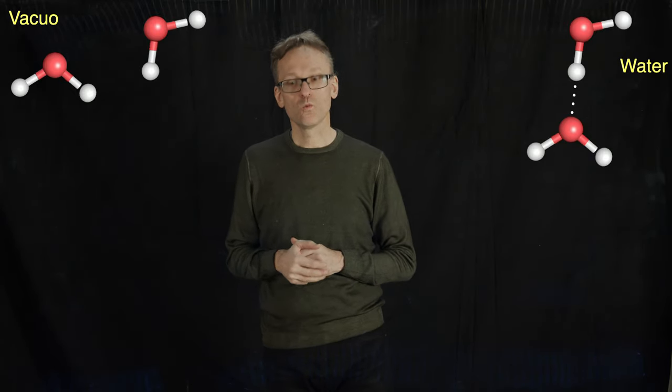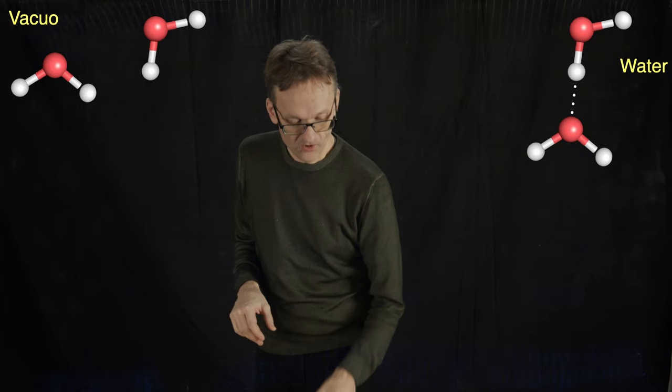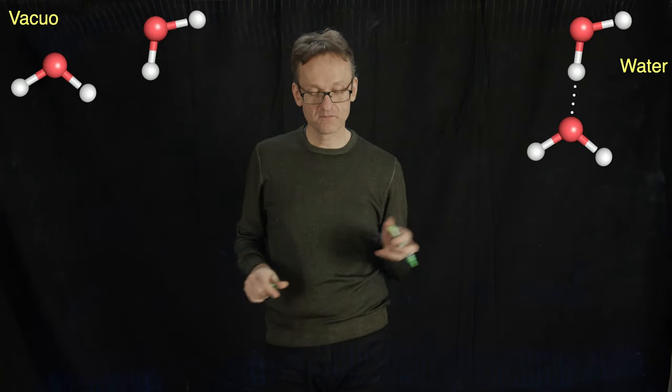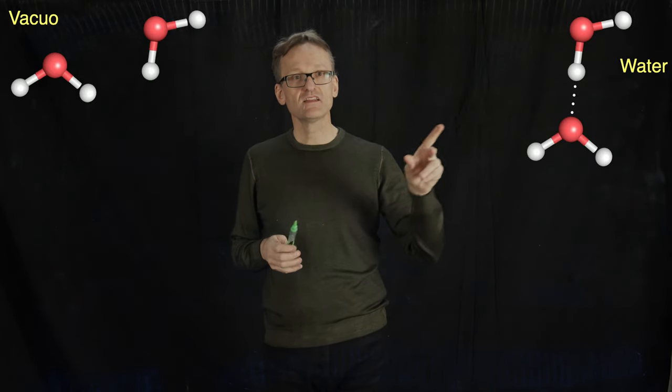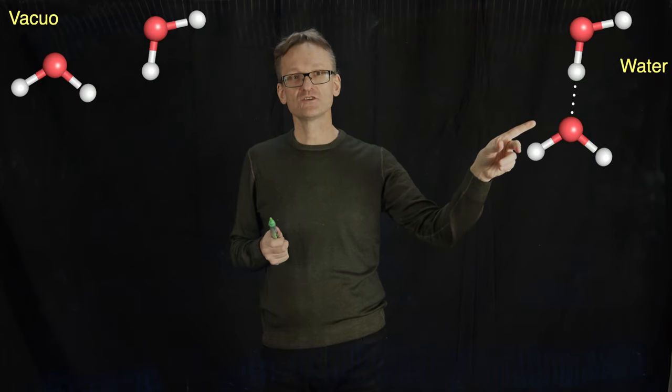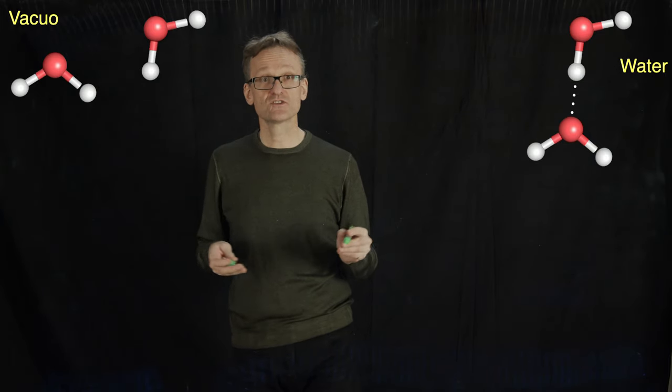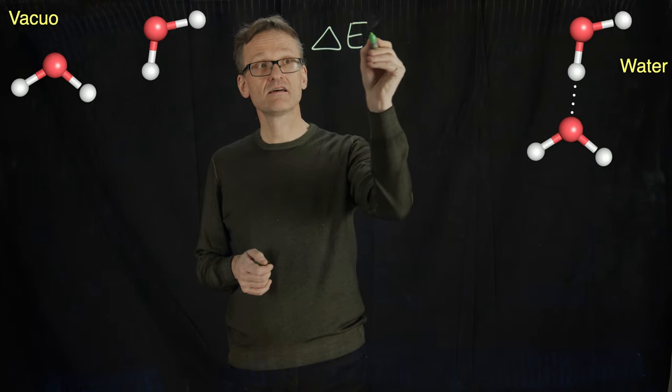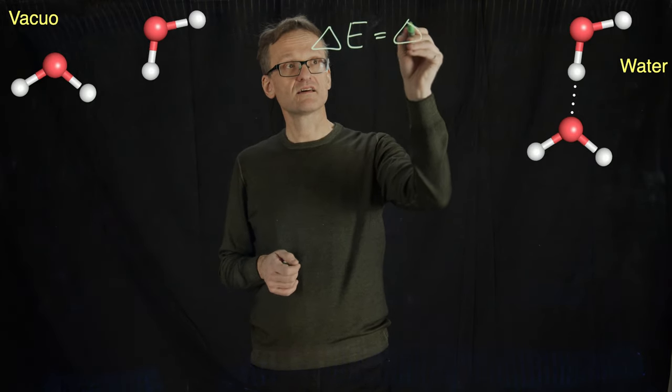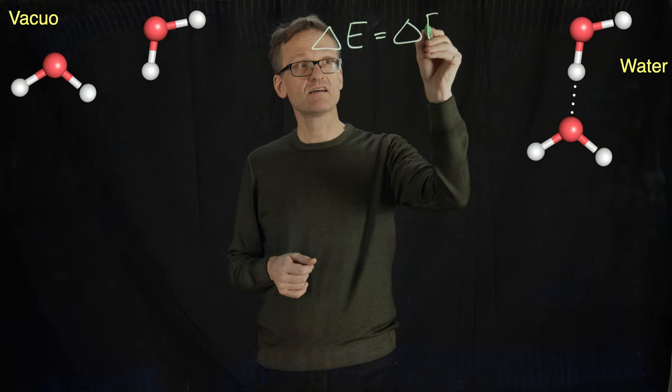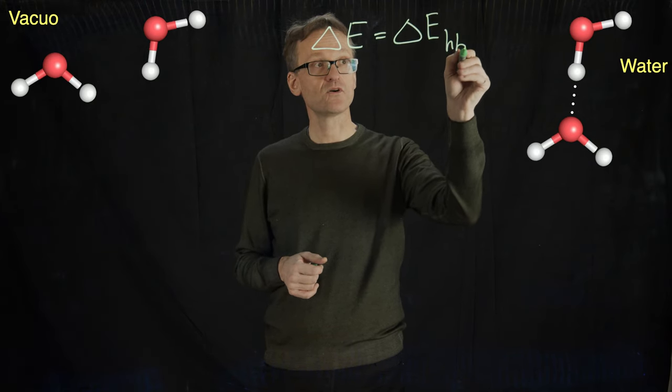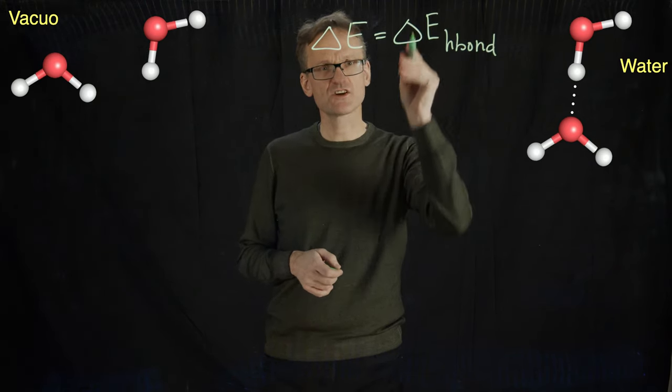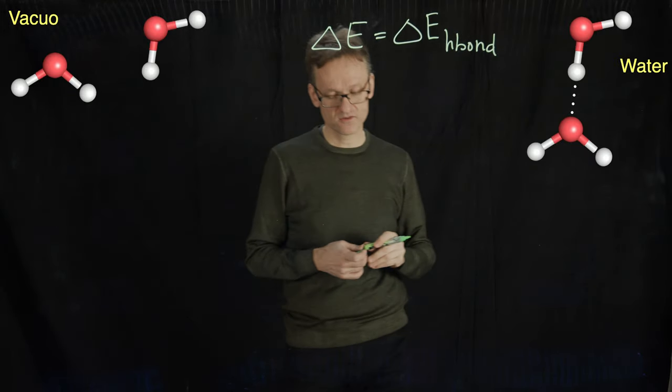So the question is what happens here? There are a couple of things. I am definitely forming one hydrogen bond here, so there is a change in delta E that is delta E H-bond, and that's going to be negative because we're forming a bond.